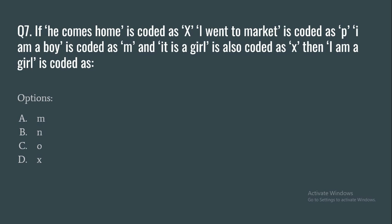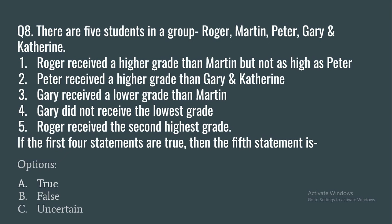Question 7: If 'he comes home' is coded as X, 'I went to market' is coded as P, 'I am a boy' is coded as M, and 'it is a girl' is also coded as X, then 'I am a girl' is coded as M and O and X — what will be the answer?